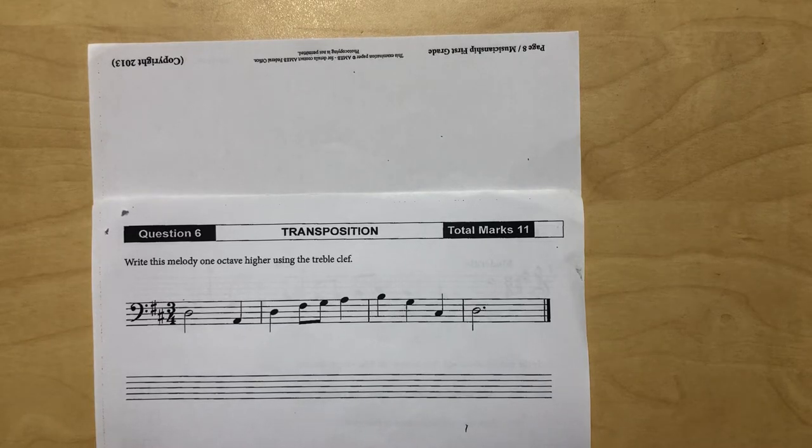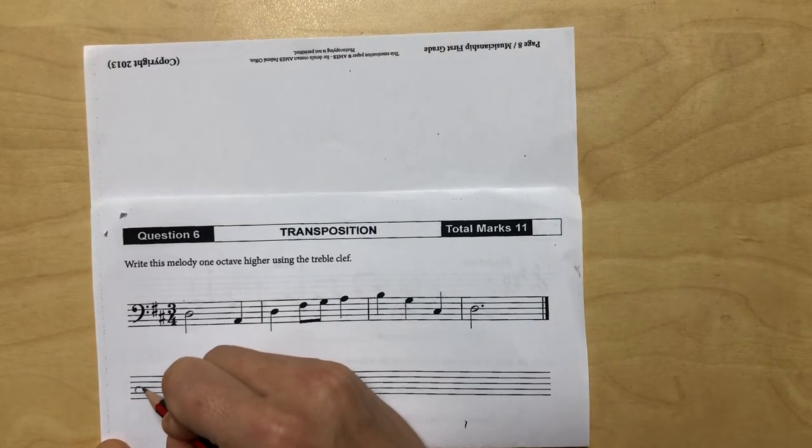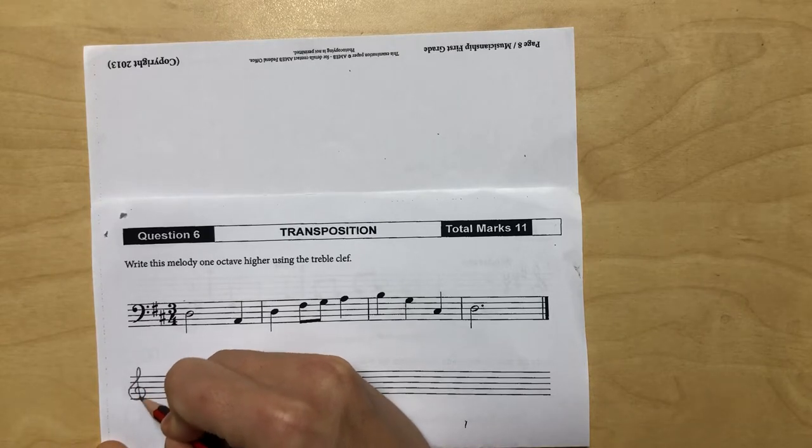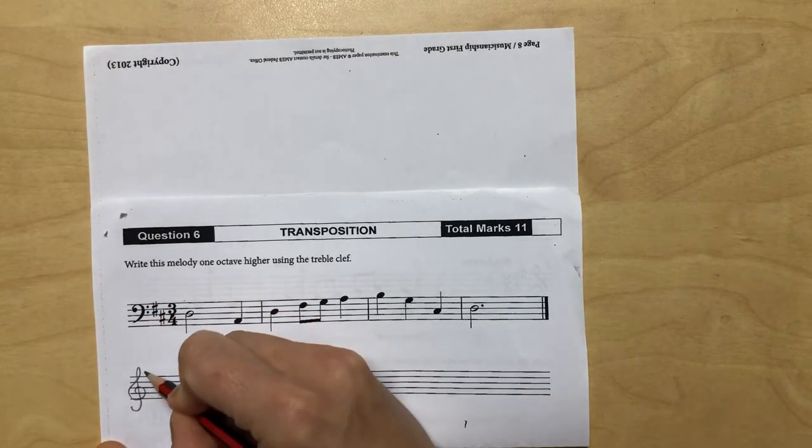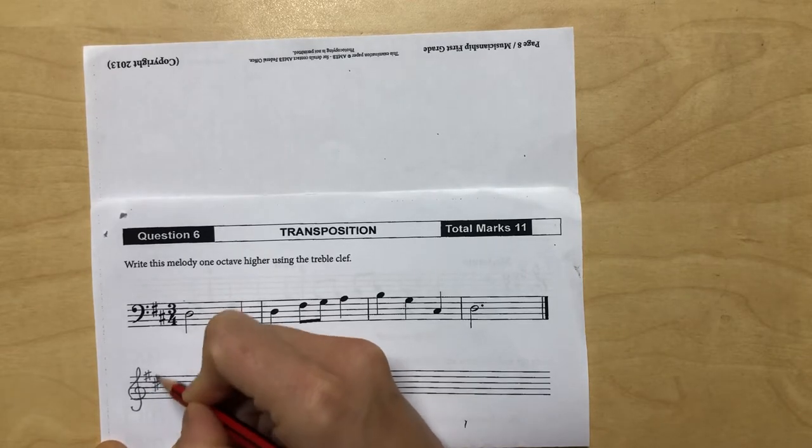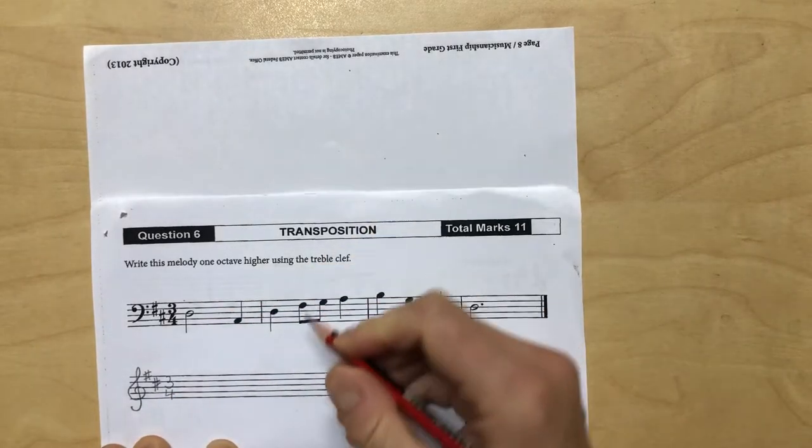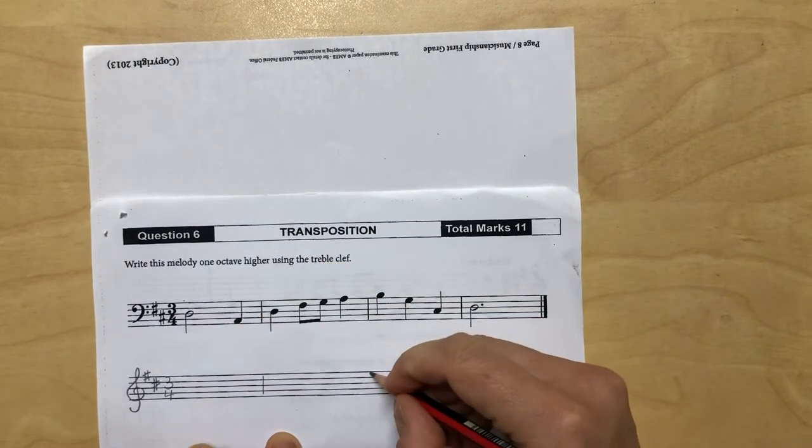Transposition: writing the melody one octave higher into the treble clef. The first thing I would do is obviously put my treble clef in and make sure that the key signature is correct for the clef. Don't just copy it from the bass clef. Put your three-four time back in and make sure all the bar lines are matching up.